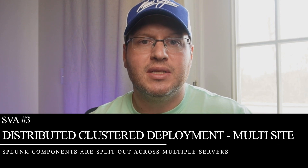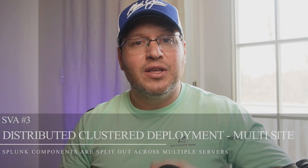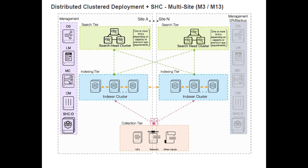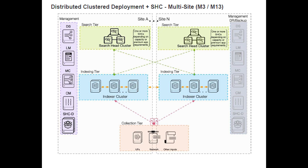The next SVA is the Multi-Site Distributed Cluster Deployment that utilizes a search head cluster. This architecture takes redundancy to the next level by effectively cloning the single-site distributed deployment. Not only is each site redundant and able to process data independent of the other site's clusters, but there is also a complete set of data replicated between Splunk clusters. That coupled with the search head cluster per site provides a measure of redundancy not found in any other SVA. This does, however, increase the complexity of the deployment, increase the total cost of ownership through infrastructure costs, and can make troubleshooting more difficult.